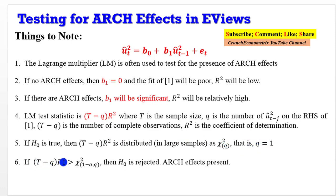If (T - q)R-squared is greater than the chi-squared statistic, then the null hypothesis is rejected and it implies that the model evidences the presence of ARCH effects. This is just for you to know what goes on in the background.